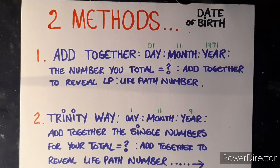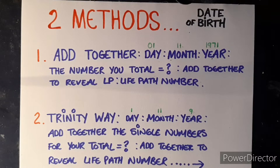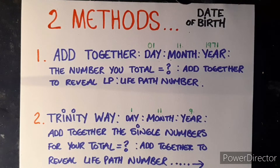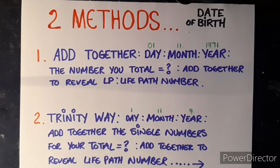The second way is the trinity method — the way I use. We do the day, the month, and the year separately. You will see my date of birth on screen. For me, I've got a one, an eleven, and a nine. I will not break the eleven — we can talk about the master numbers in another video. You can add them together to reveal the bigger number.